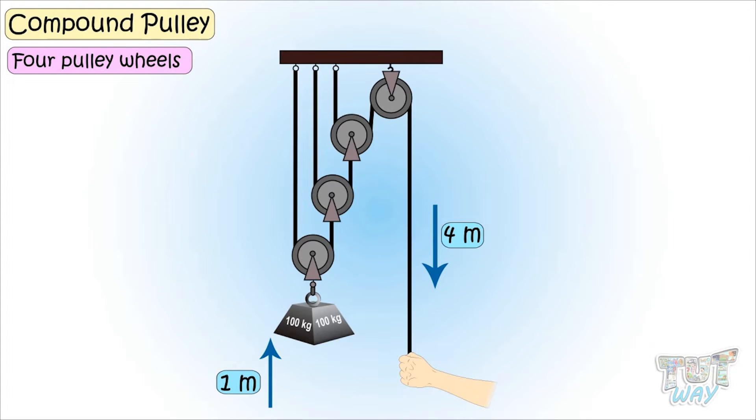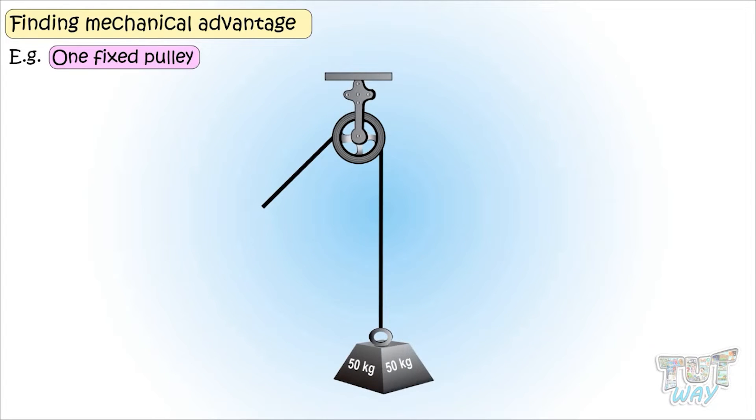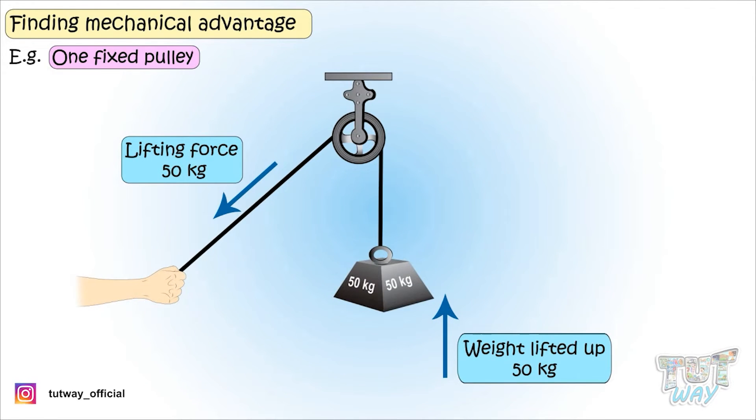Now let's see some examples of finding mechanical advantage. Here we have one fixed pulley, that is where pulley does not move at all and is fixed, and the weight is attached to one end of the rope and the other end is free to be pulled by any person. For pulling or lifting a 50 kg weight, a force of 50 kg is required. So no mechanical advantage is there.